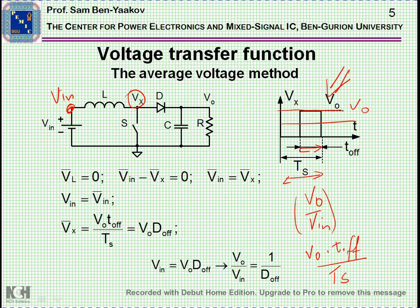When I compare this expression to V in, I can get the expression for V out over V in, which is 1 over D off.